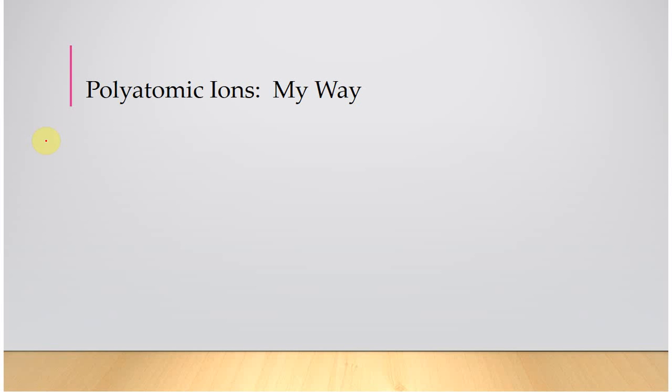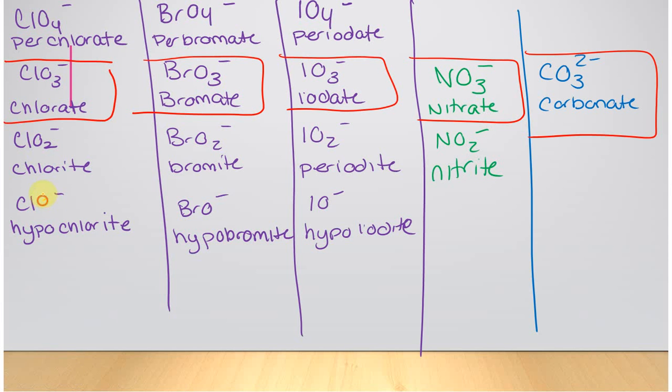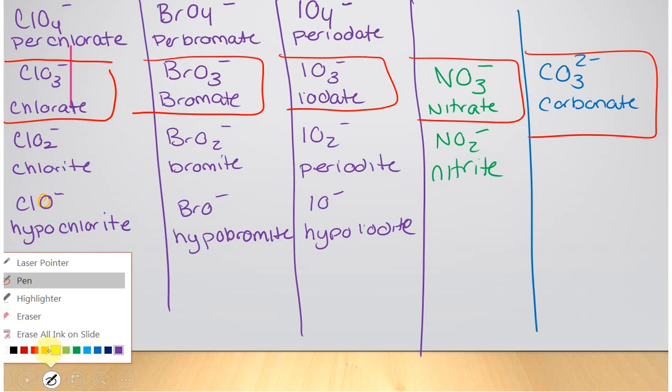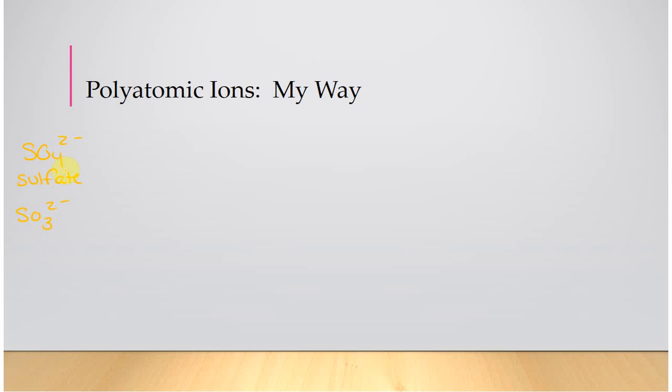I'm going to go ahead and start writing some more. Carbonate was the last one. Then we have sulfate. Sulfate is SO4 with a 2 minus charge. Again, there's no persulfate. There's no hyposulfite. There's just sulfate and SO3 2 minus. Make sure that when you are writing this, you are capital S, capital O, subscript 3, superscript 2 minus here. This is sulfite. Again, I would really just focus on, because of the trend, if you know sulfate, you're going to know sulfite.